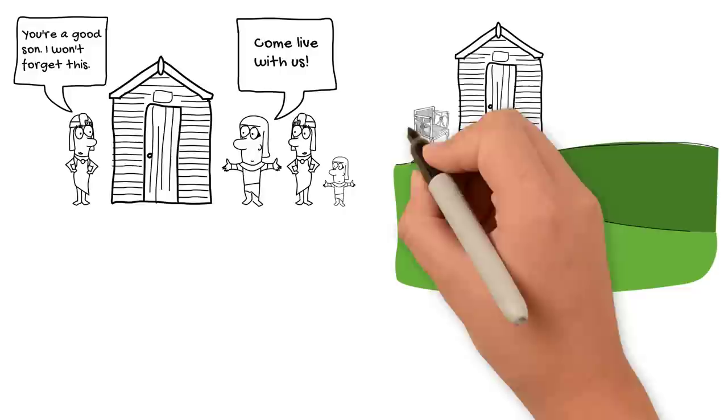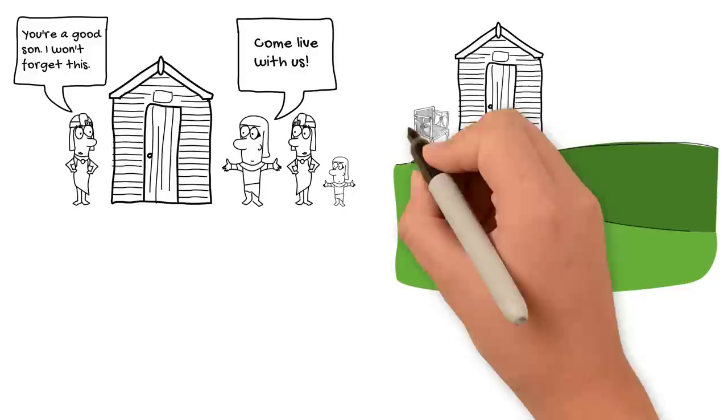This inheritance might include such things as houses, farms, and everyday items like dishes.